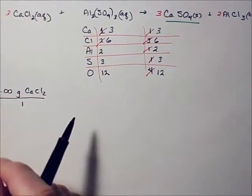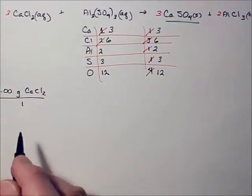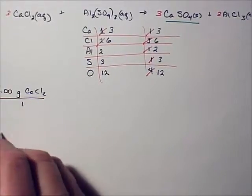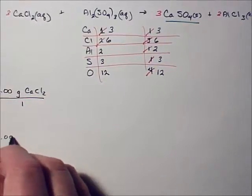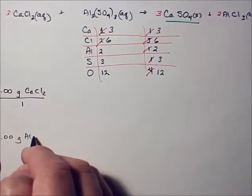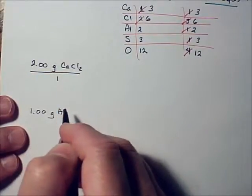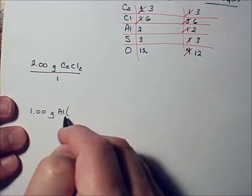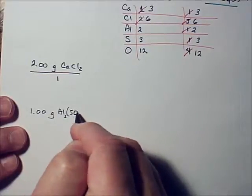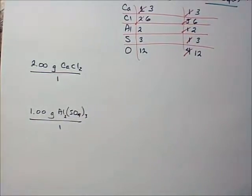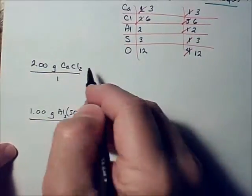We're going to always put our starting amounts over one. And then we have one gram of aluminum oxide. Wait, I'm sorry, I'm looking at the wrong problem. Aluminum sulfate. Both of us go over one because we always put our starting amounts over one.